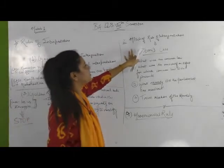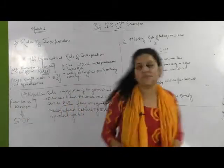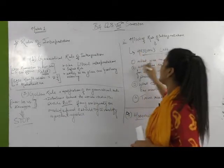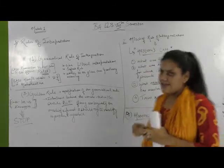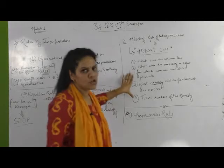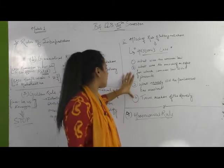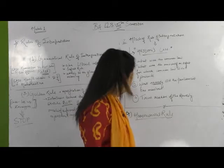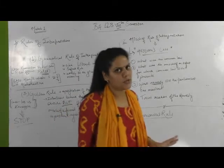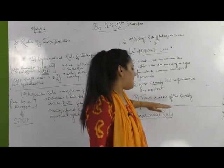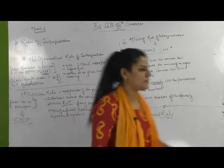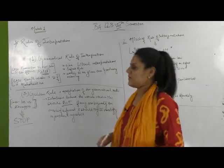The second rule under the rules of interpretation is the mischief rule of interpretation. This rule has taken its birth from a case known as Hayden's case. There were four basic principles which arose after this case, forming the base for rules of interpretation for any court or person supposed to interpret the law.